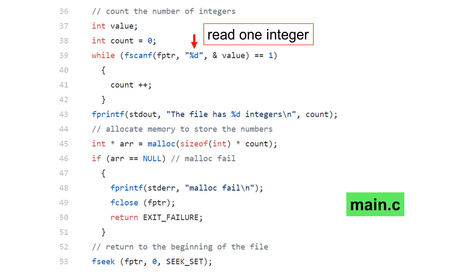When the program reaches the end of the file and cannot read any more integers, fscanf returns 0. Line 45 allocates memory to store the data from the file. The amount of memory needed depends on the number of integers in the file.